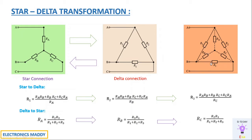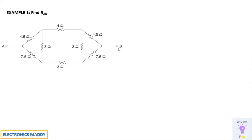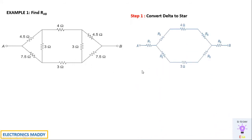Now let's look at three problems, each involving a different idea. Once you understand these three problems clearly, you'll be able to solve any star-delta transformation problem. In the first example, we're given a network and asked to find the equivalent resistance from A to B. The first step is to convert delta to star — observe the circuit and you can clearly see two delta configurations. All resistance values are 4.5, 4.5, 7.5, 7.5, 3, and 3 ohms.